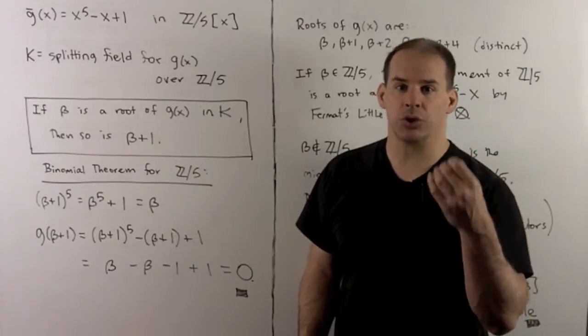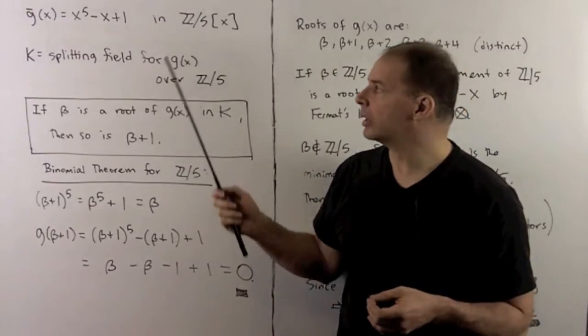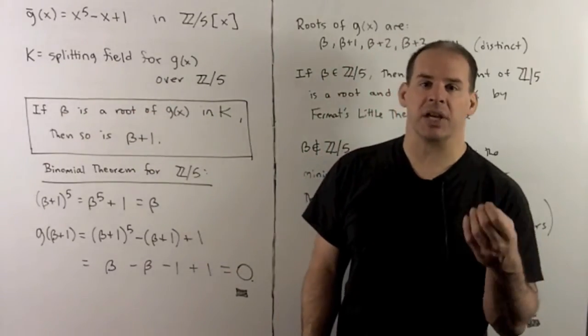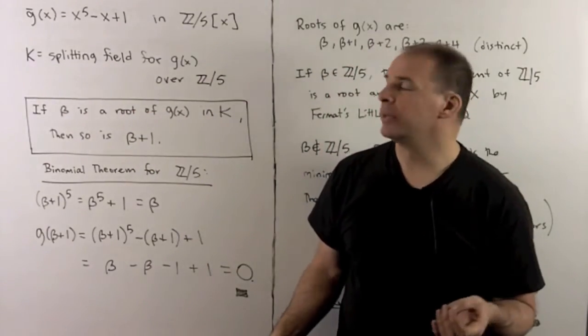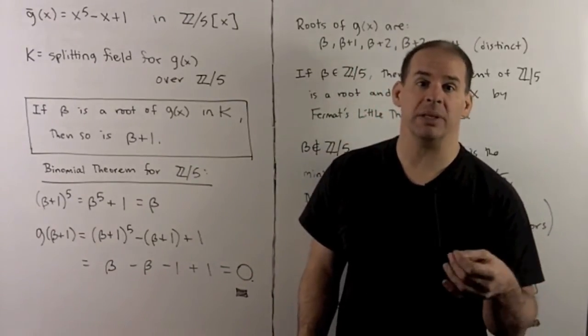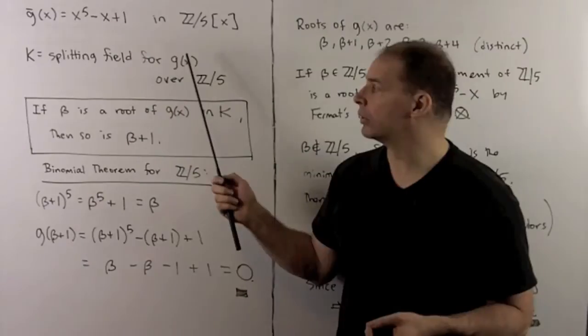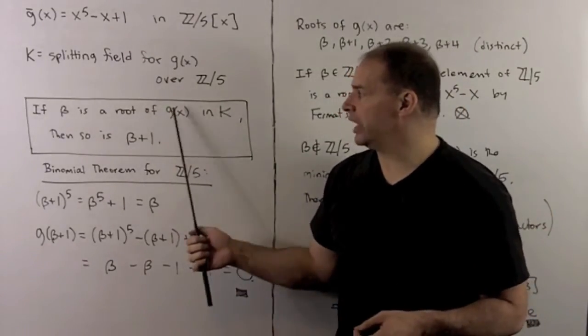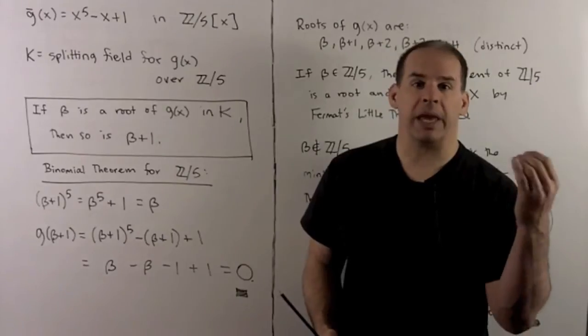In our case, there's a special trick. Now, we have g bar equal to x to the fifth minus x plus one over Z mod five. I'll let K be the splitting field for g over Z mod five. Our first step: if beta is a root of g in K, then so is beta plus one.